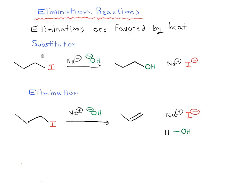In our first reaction, I draw out a substitution process. You'll see that in both cases the substrates are completely the same, except the products are different. So in this first reaction, we have a substitution. We're starting with propyl iodide and we're adding sodium hydroxide. We're breaking the carbon-iodine bond and we're forming carbon-OH, and we're forming sodium iodide. So that's a straightforward substitution reaction.